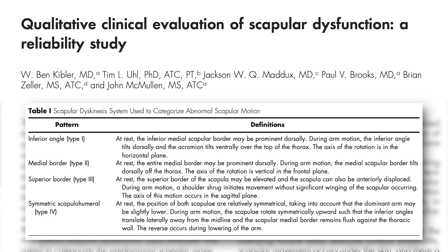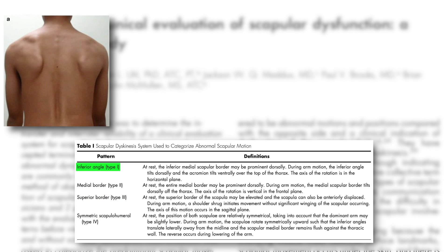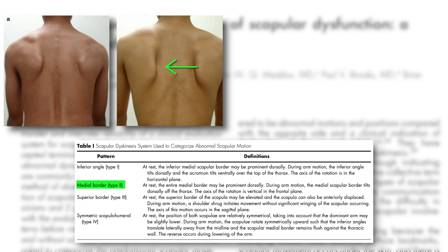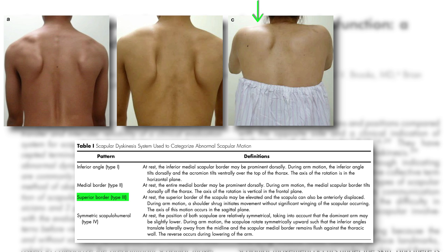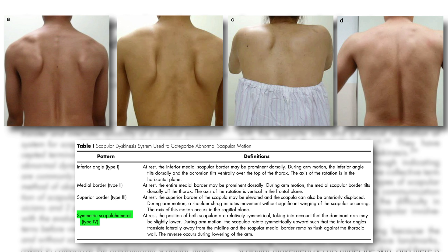Scapular dyskinesis — what is it? Basically, it's abnormal scapular motion, but it's really hard to define abnormal because, as I just highlighted, we have a difficult time defining normal. There are three primary scapular dyskinesis classification systems. The first started with Kibler et al. in 2002, and they categorized scapular motion into four types. Type 1 would be inferior angle prominence during overhead motion. Type 2 would be medial border prominence during overhead motion. Type 3 was superior, meaning a shrug of that shoulder, and then type 4 they identify as normal scapular motion.